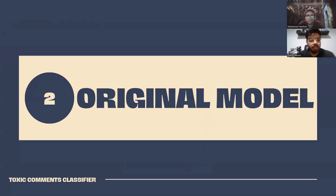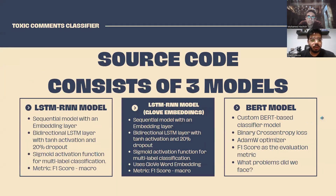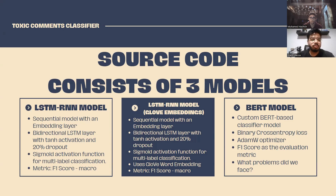For the original model, based on feedback received after the first milestone, we searched for a baseline model similar to the initial one but using deep learning. The first deep learning model is an LSTM RNN — a sequential model with an embedding layer and a bidirectional LSTM layer, where the output layer uses a sigmoid activation function. The bidirectional LSTM layer has a tanh activation function and 20% dropout. The second model is similar but includes word embedding techniques, using optimization algorithms such as stochastic gradient descent to adjust word vectors and minimize the difference between predicted and actual occurrences, capturing meaningful semantic relationships between words.